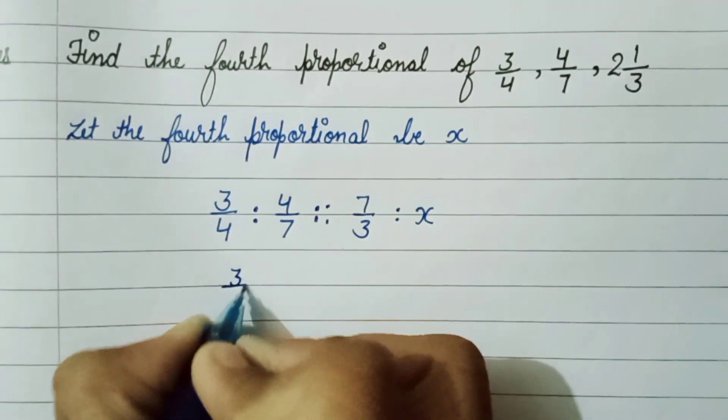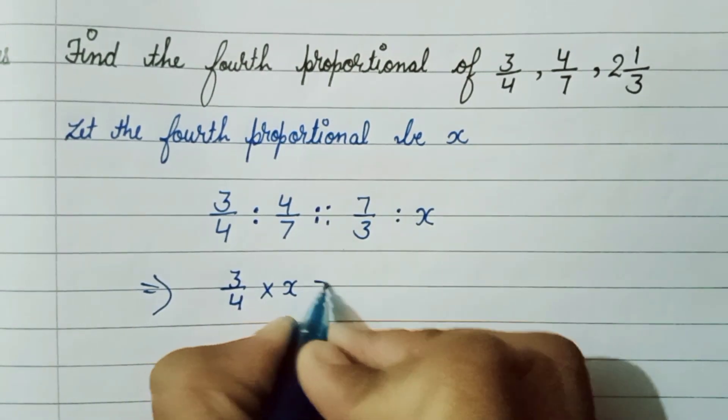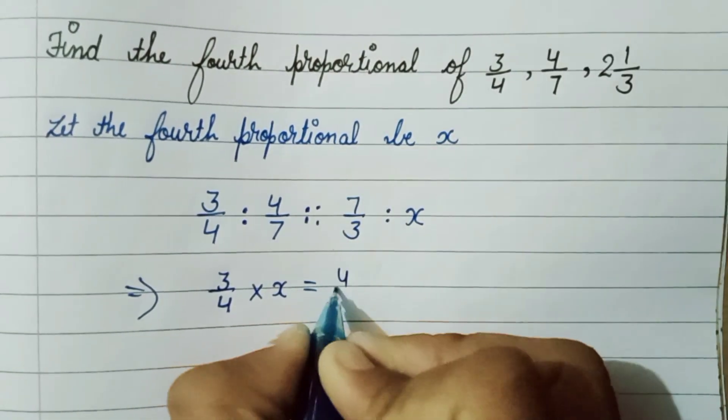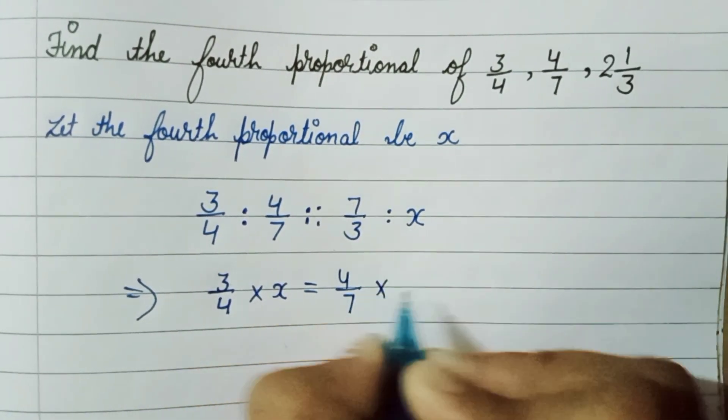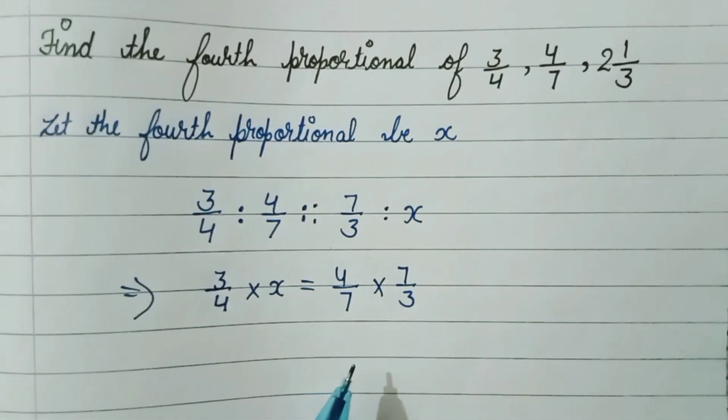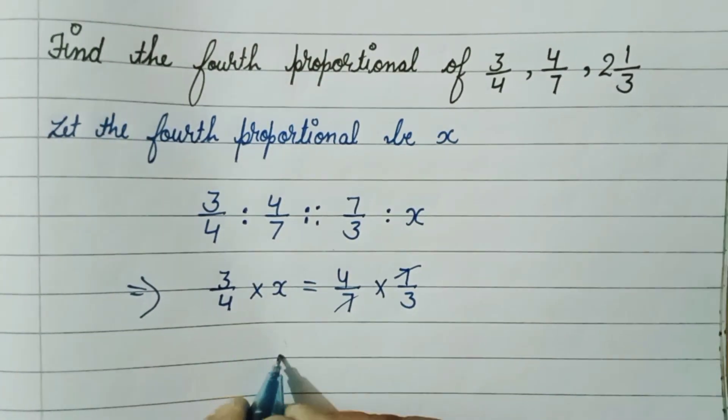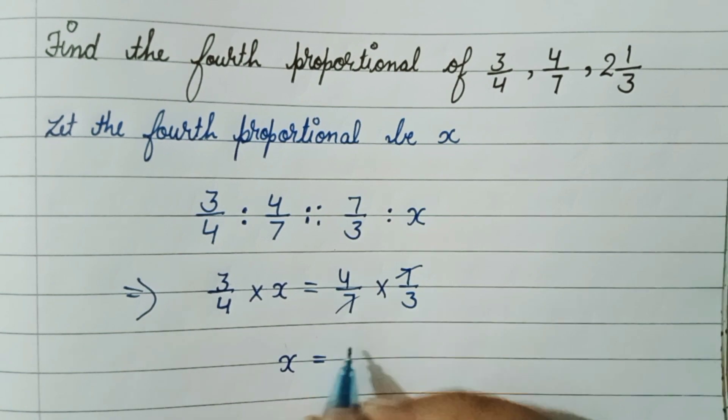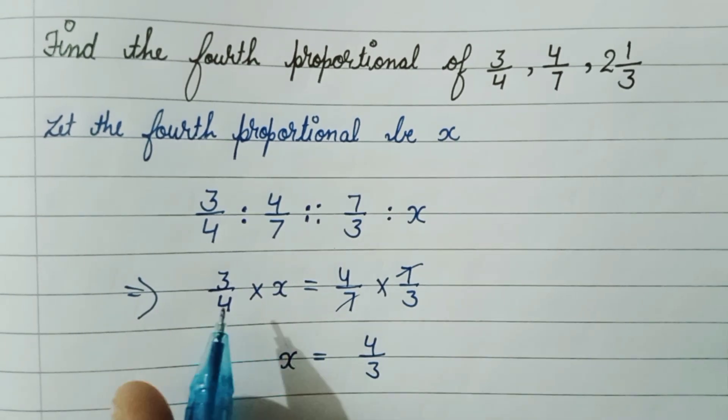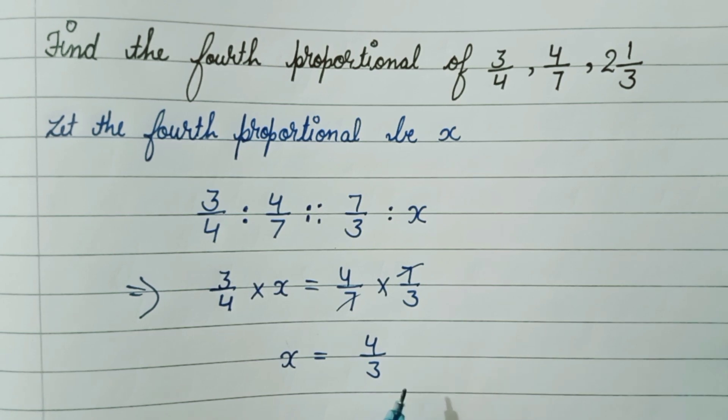The product of extremes is 3/4 into x, so we can write 3/4 × x equals the product of means, which is 4/7 × 7/3. When we solve this, we get x equals 4/3.